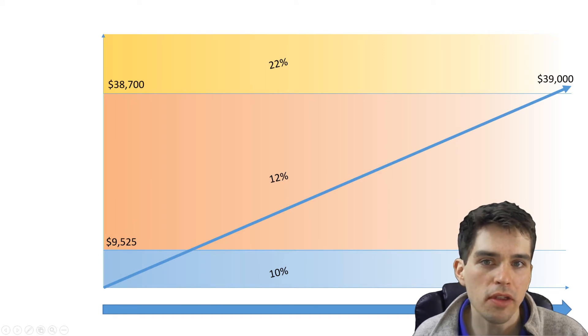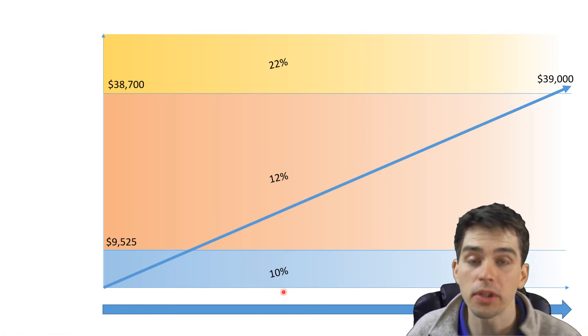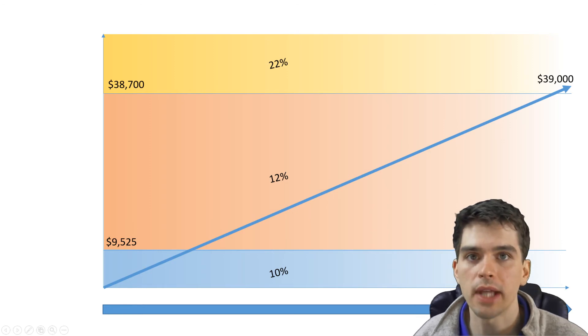So only the $300 I make above $38,700 are taxed at 22%. All of the money I make in this tax bracket is only taxed at 12%. And the first $9,525 I make are only taxed at 10%. So let's look at what that looks like.